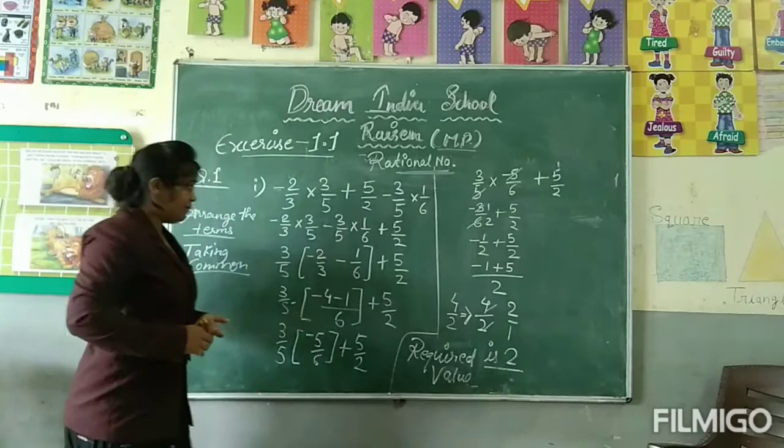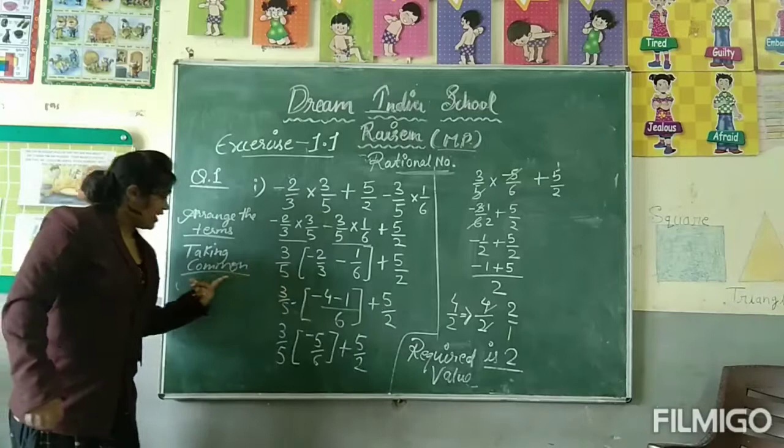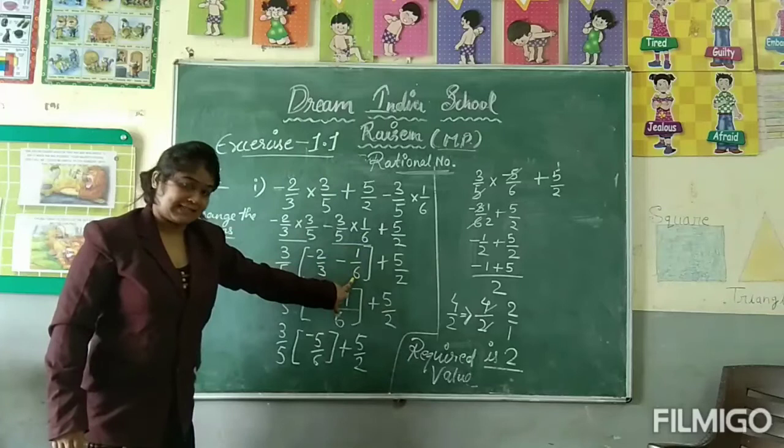Now taking common 3 upon 5. The remaining terms are minus 2 upon 3, next minus 1 upon 6. Now write this into a square bracket.